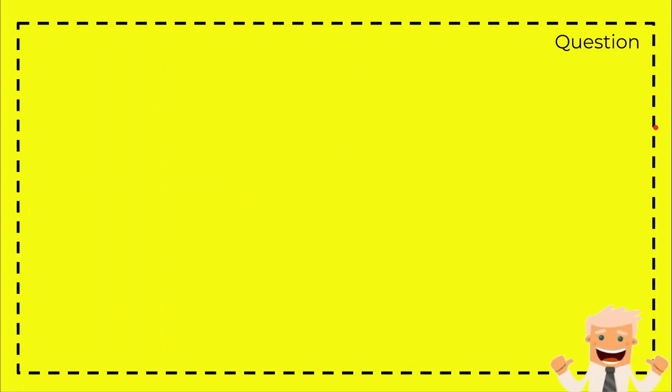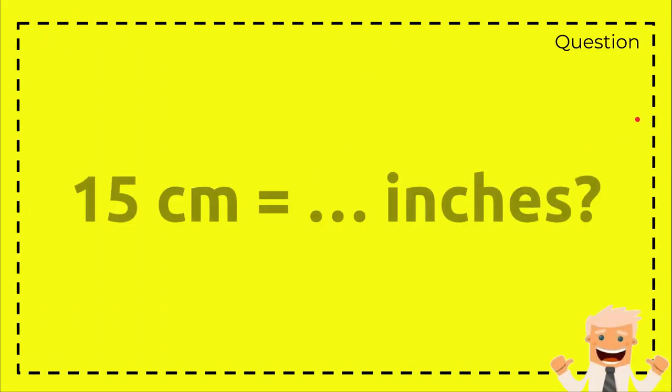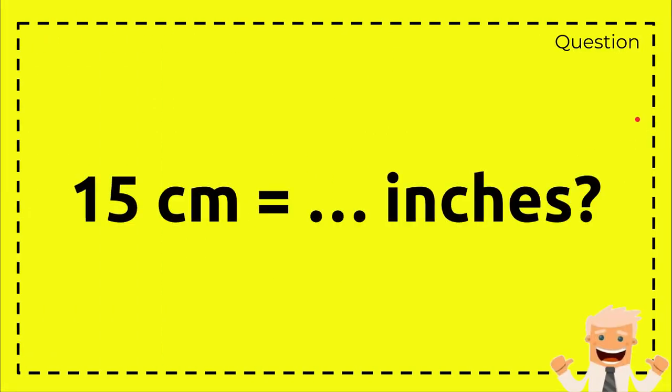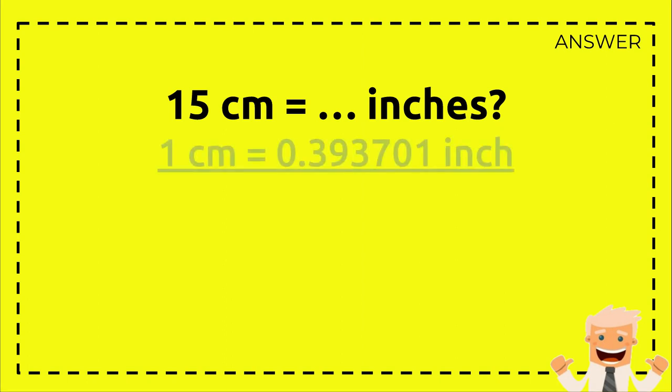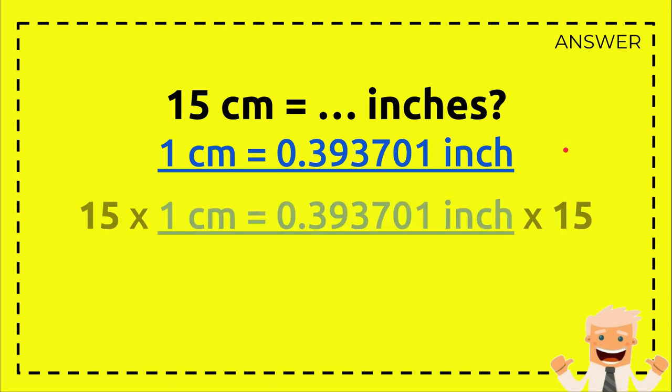And here's the question: 15 centimeters equals how many inches? And here's the answer. First you need to write the question again: 15 centimeters equals how many inches. And here's the formula: one centimeter equals 0.393701 inch.